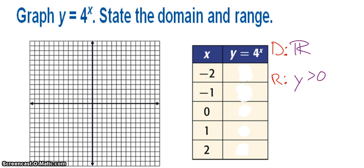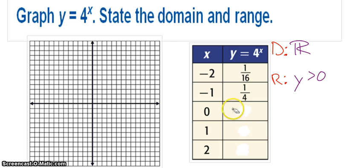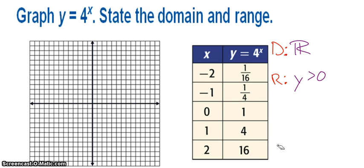So, one option is to make yourself a table. We can plug in negative 2, so I have 4 to the negative 2nd. Remember, that negative exponent brings our answer down to the bottom. So, I have 1/16, 4 to the negative 1st is 1/4, anything to the 0 is 1, 4 to the 1st, and 4 squared.